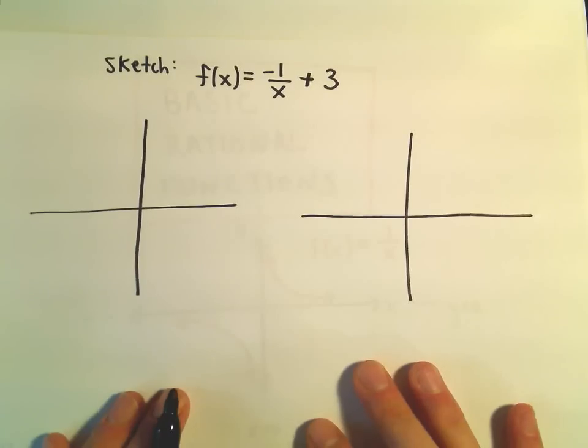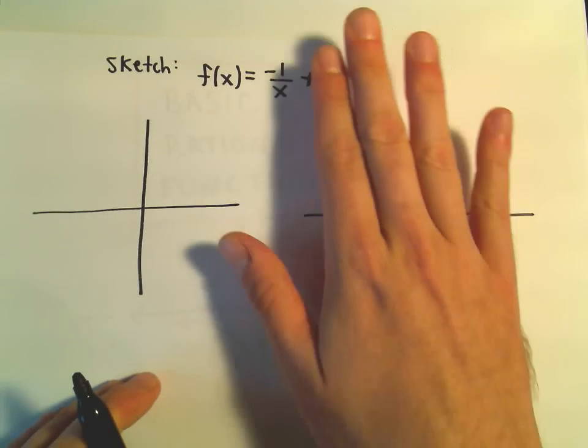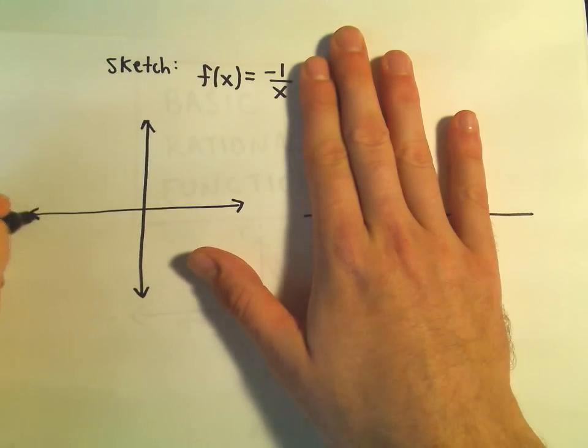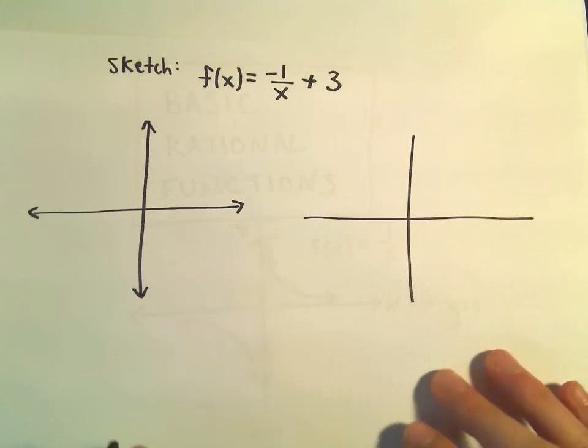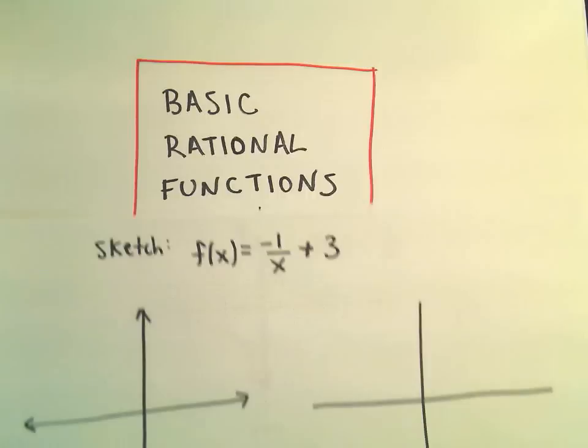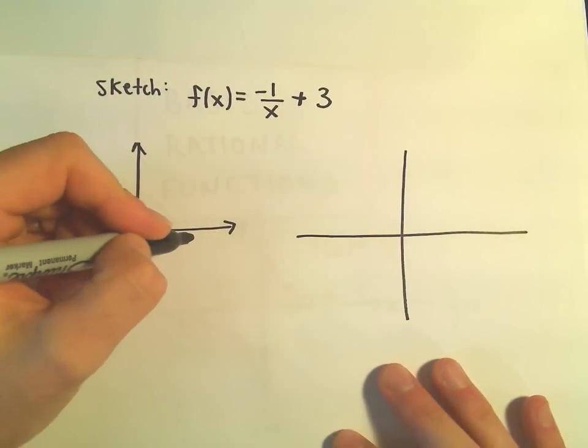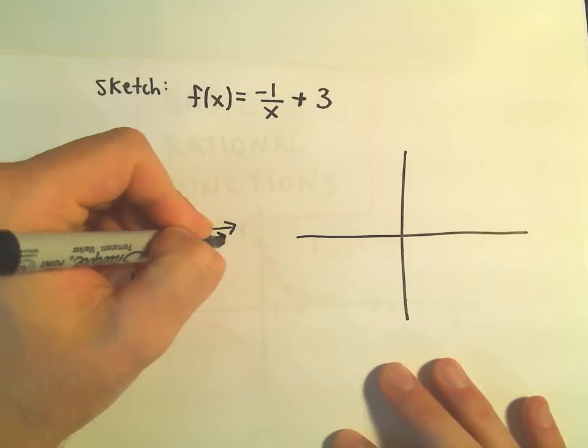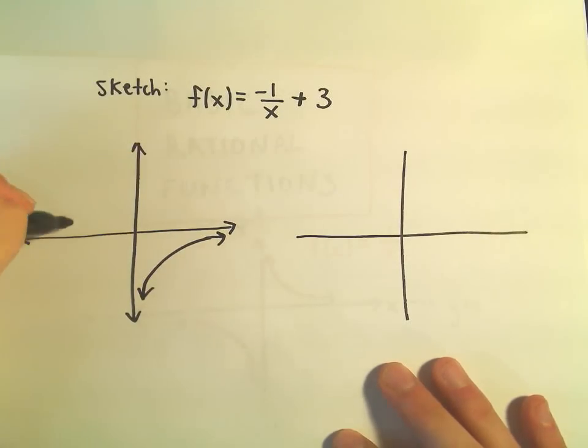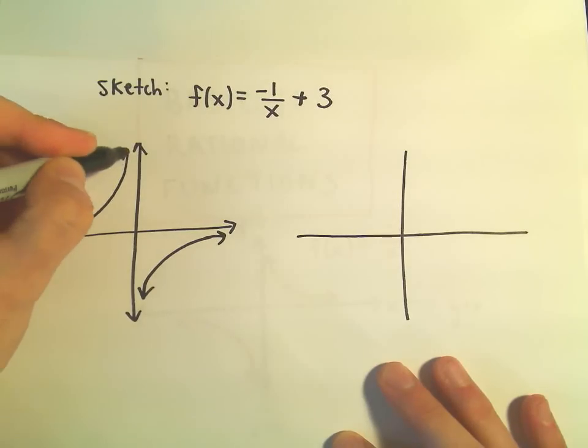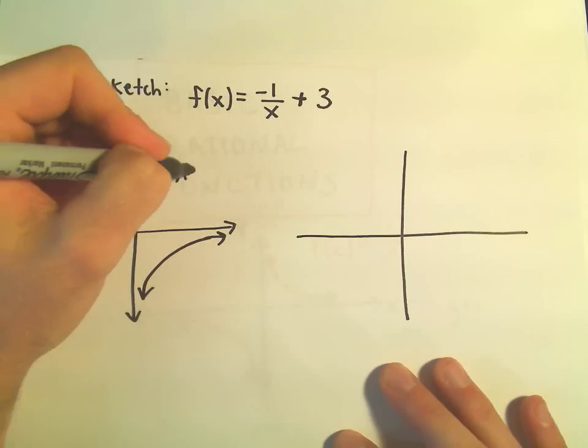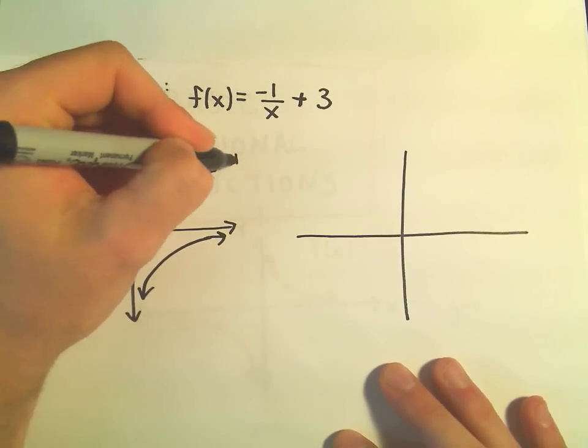So suppose we want to graph negative 1 over x plus 3. Well, the negative 1 over x, remember, all that does is it's just going to take our graph and reflect it about the x-axis. So the part that had been in the top right will now be in the bottom right, and then the part that had been in the bottom left will now go up in the top left. So this would be my graph of f of x equals negative 1 over x.